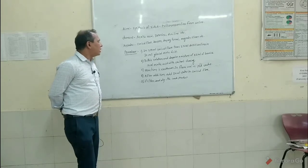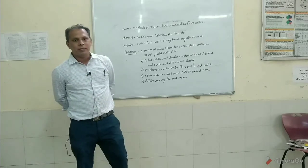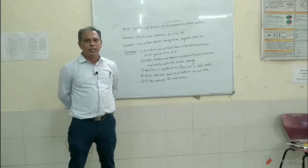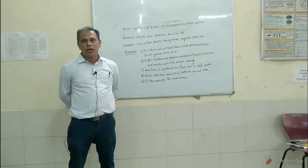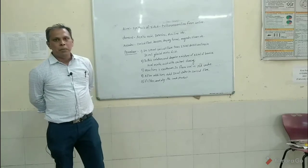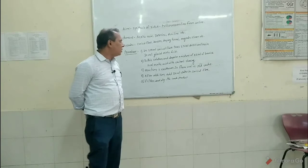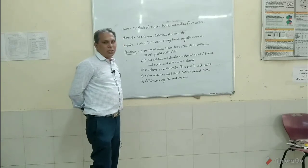For that, we require chemicals such as glacial acetic acid, bromine, and aniline. We also require apparatus such as a conical flask, a beaker, a measuring cylinder, a dropper, and a magnetic stirrer.